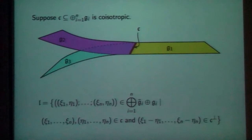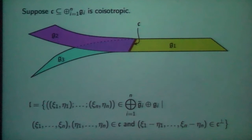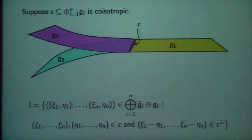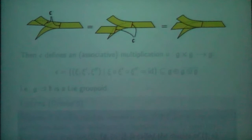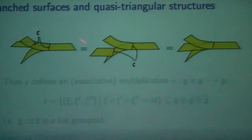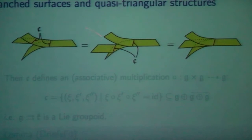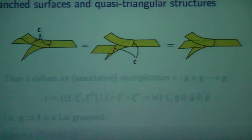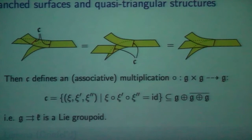It's easy to generalize: you can take any collection of edges and color that collection by some coisotropic subalgebra. A lot of Lagrangian subalgebras are just generalizations of the ones in the previous slides — for single edges and for multiple edges. Let's look at an example. Suppose I don't want to change my structure group when I cross these branch points, so I'm coloring these branch points by some coisotropic subalgebra. Suppose I also want some sort of associativity — so I can move those branch points past each other. Well, that kind of defines an associative multiplication on G, meaning this coisotropic subalgebra is the graph of an associative multiplication on G, and in particular G becomes a Lie algebra with some additional structure.